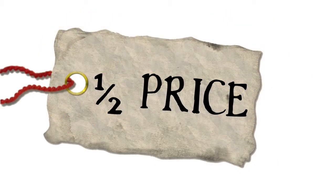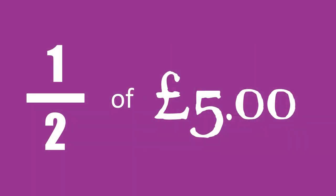Another common fraction is when you're told that something is half price. Working this out isn't too tough, because you can just divide it by two to give you your answer.